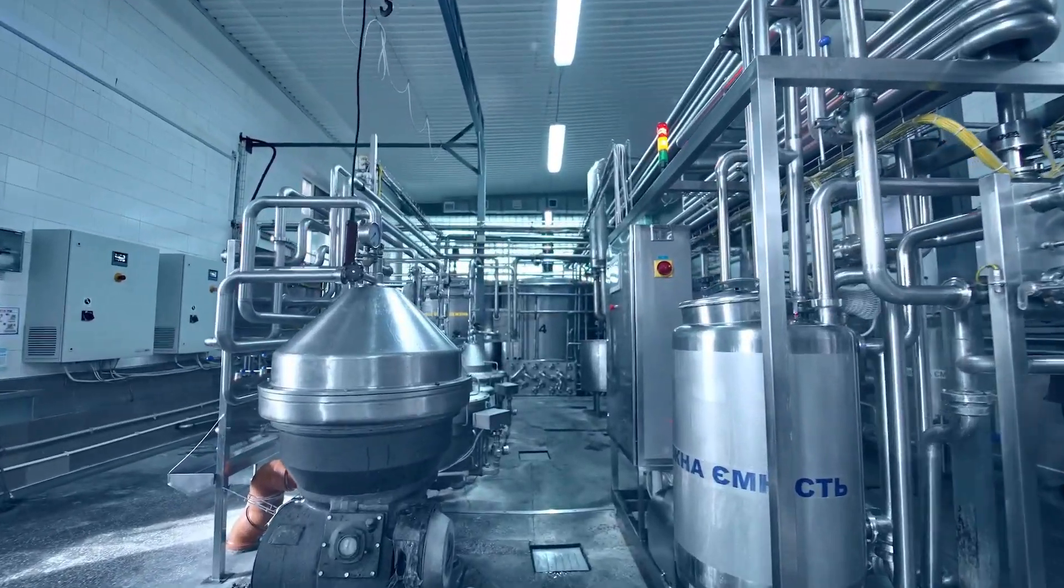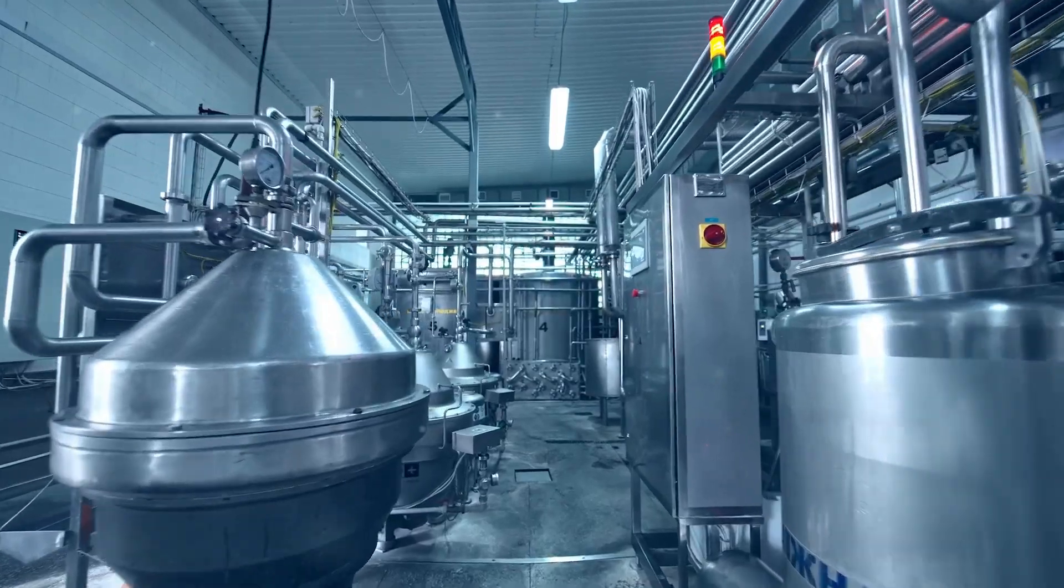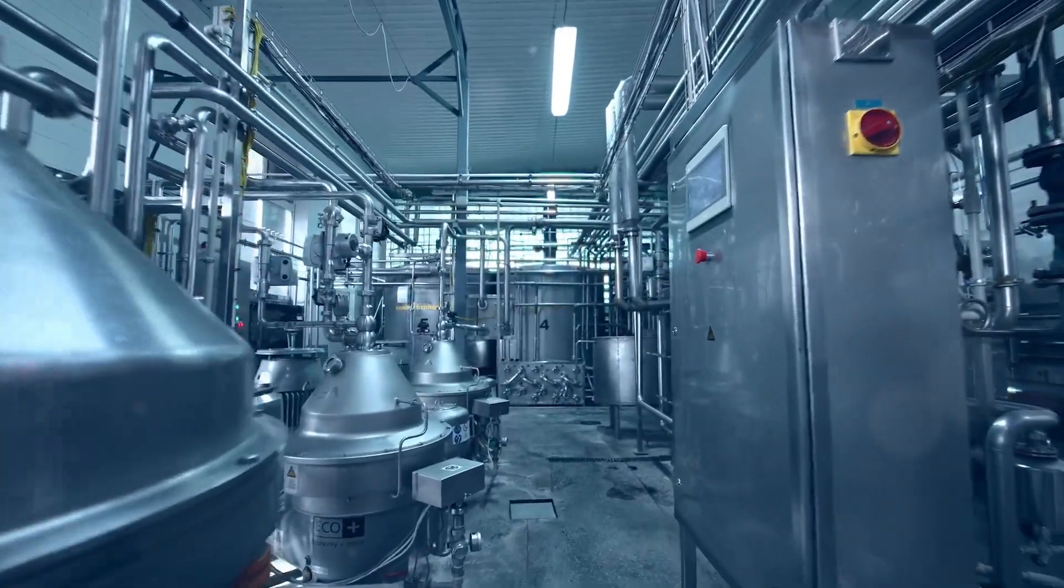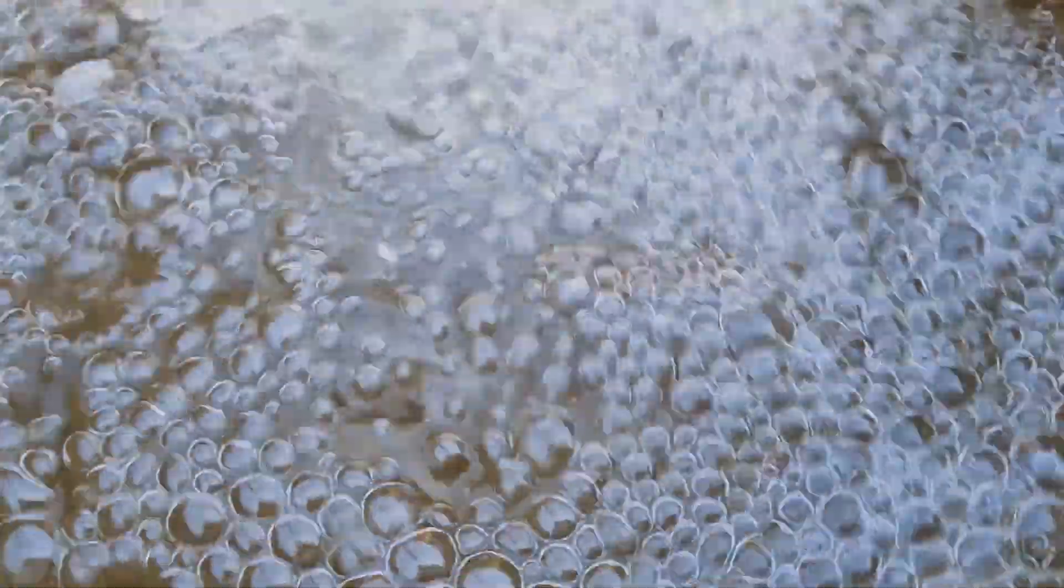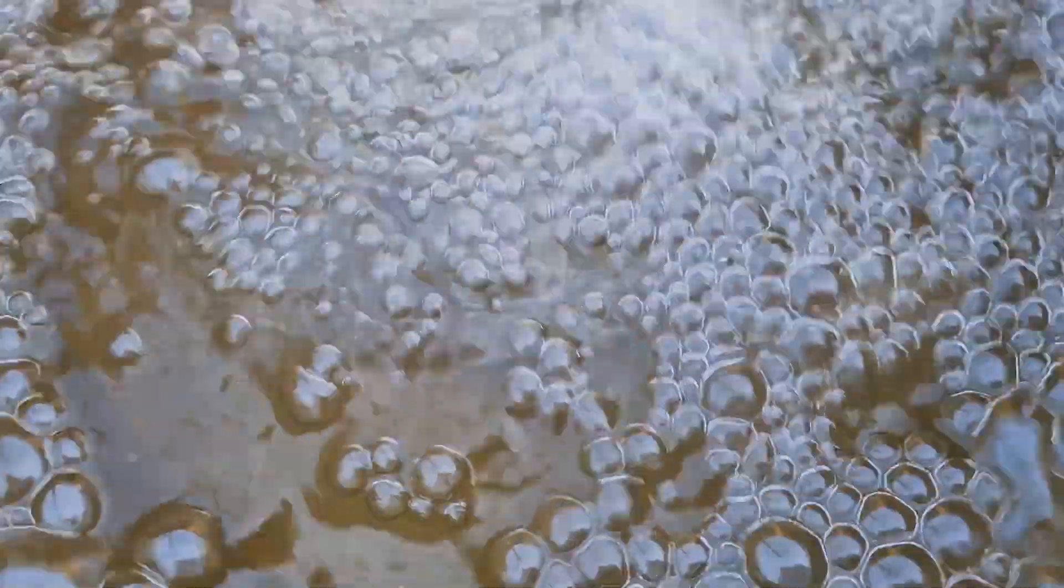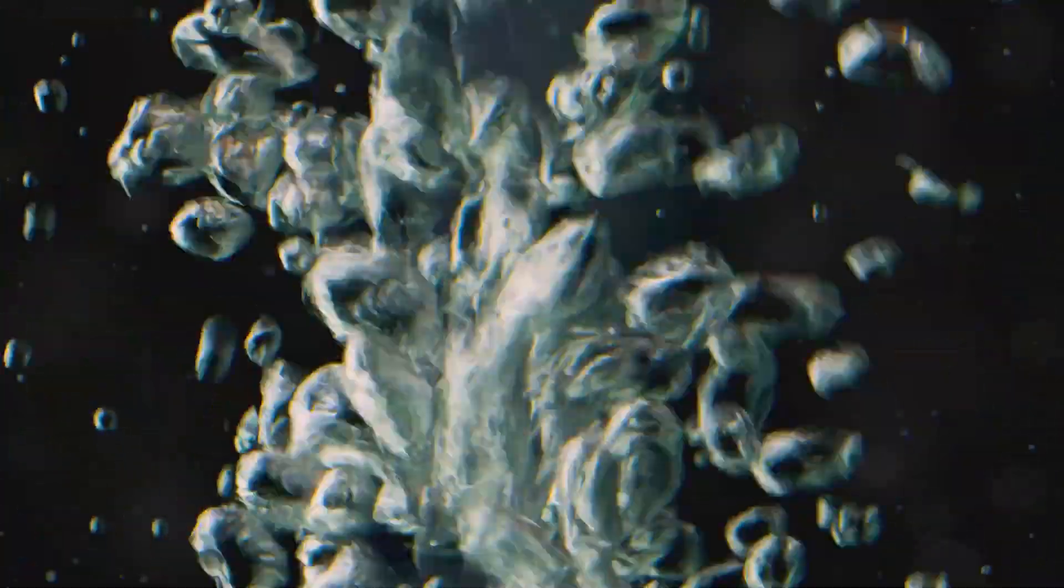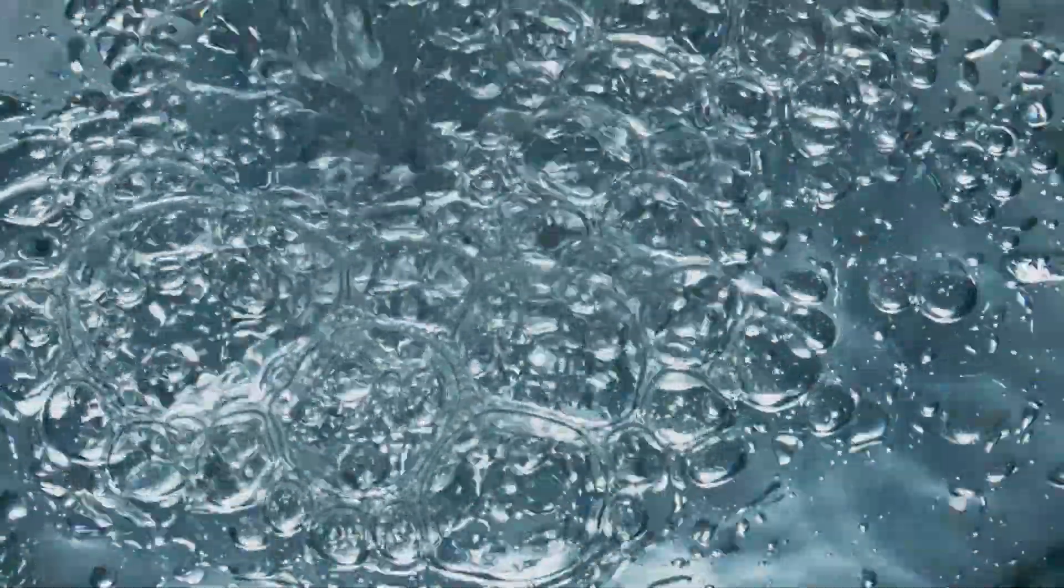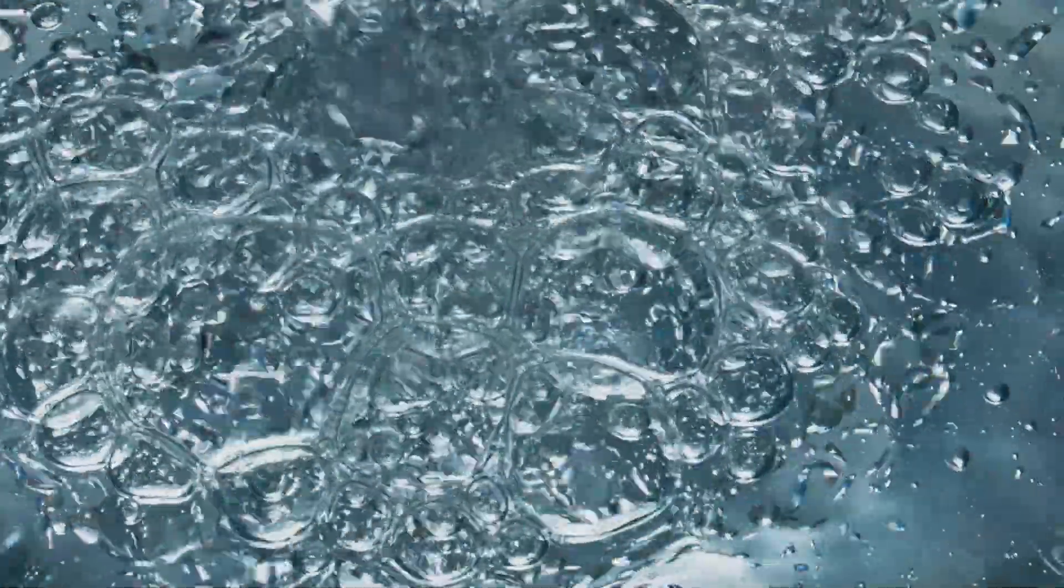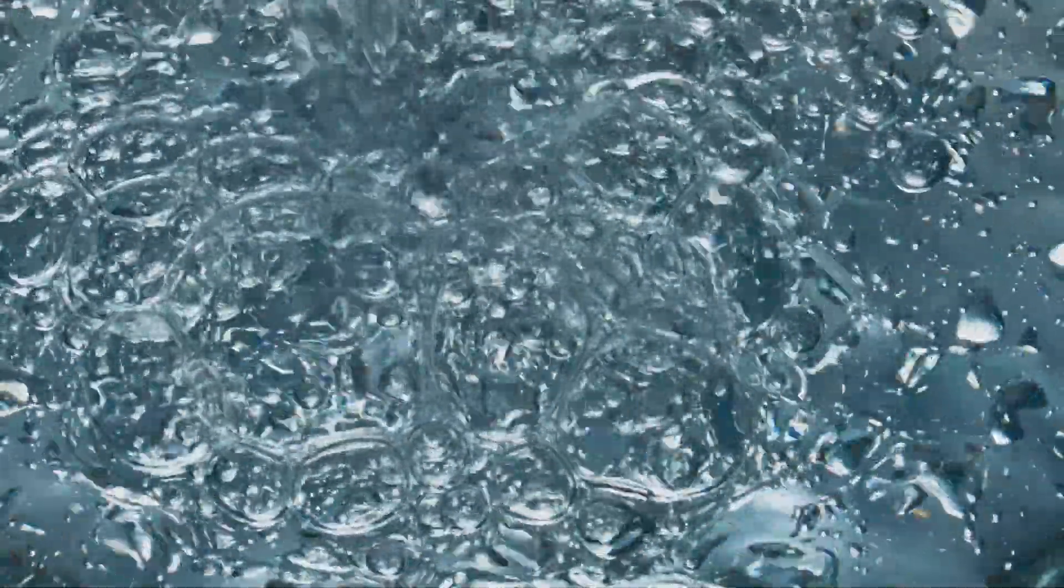The beauty of the Eulerian model lies in its capacity to handle diverse flow regimes. Picture a gentle stream bubbling over rocks, a scenario aptly described by the bubbly flow regime. Discrete gas bubbles rise through the liquid phase governed by buoyancy and drag. The Eulerian model captures the collective behaviour of these bubbles, predicting their rise velocity and distribution.